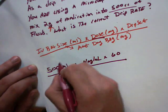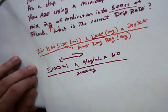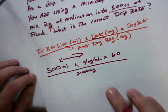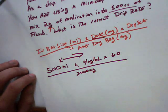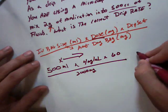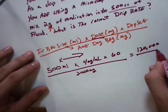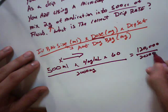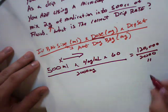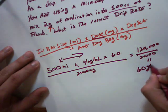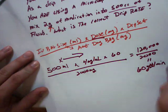Let's go ahead and just multiply straight across. So we'll multiply 500 times 4 times 60. For those of you keeping score at home, that's going to be equal to 120,000. Put that over 2,000, and that equals 60 drops per minute.